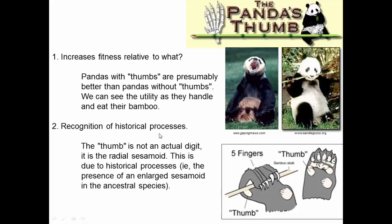Recognizing the historical processes: that thumb is not an actual real digit — it's an enlarged radial sesamoid, a bone in the wrist. The fact that it's that particular bone arises from historical processes. The radial sesamoid is slightly enlarged in all bears; it's just even more enlarged in pandas. We can understand this adaptation by recognizing that the increased fitness comes from being able to eat better, and the particular structure of the trait arises from ancestors already having a slightly enlarged radial sesamoid — though other bears don't have it enlarged enough to function as a pseudo-finger the way pandas do.